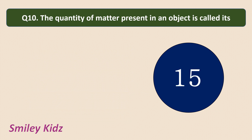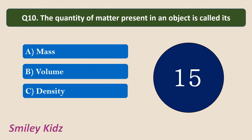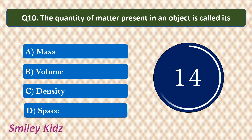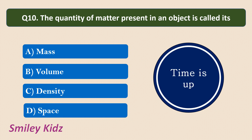Question number 10. The quantity of matter present in an object is called its? Options are: mass, volume, density, or space. The correct answer is mass. The quantity of matter present in an object is called its mass.